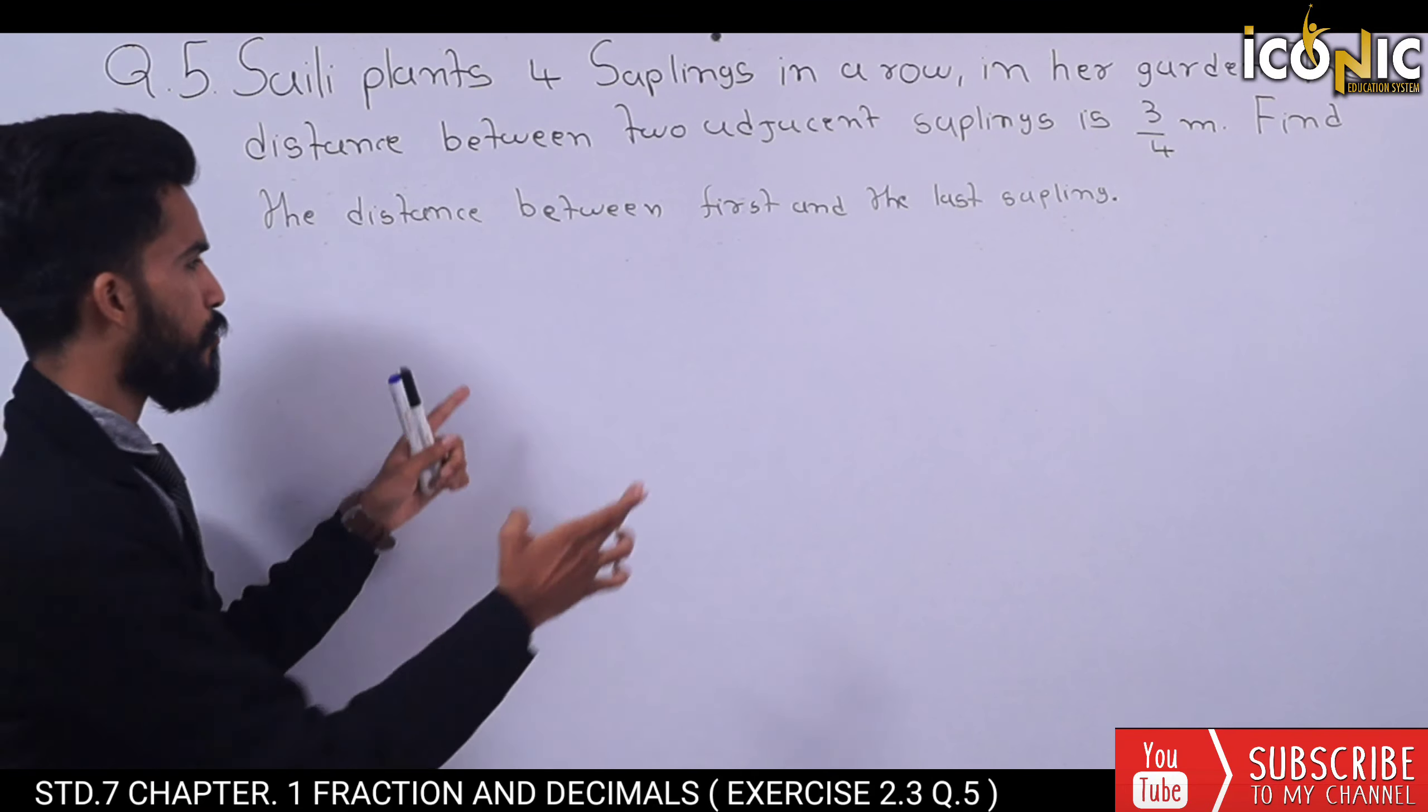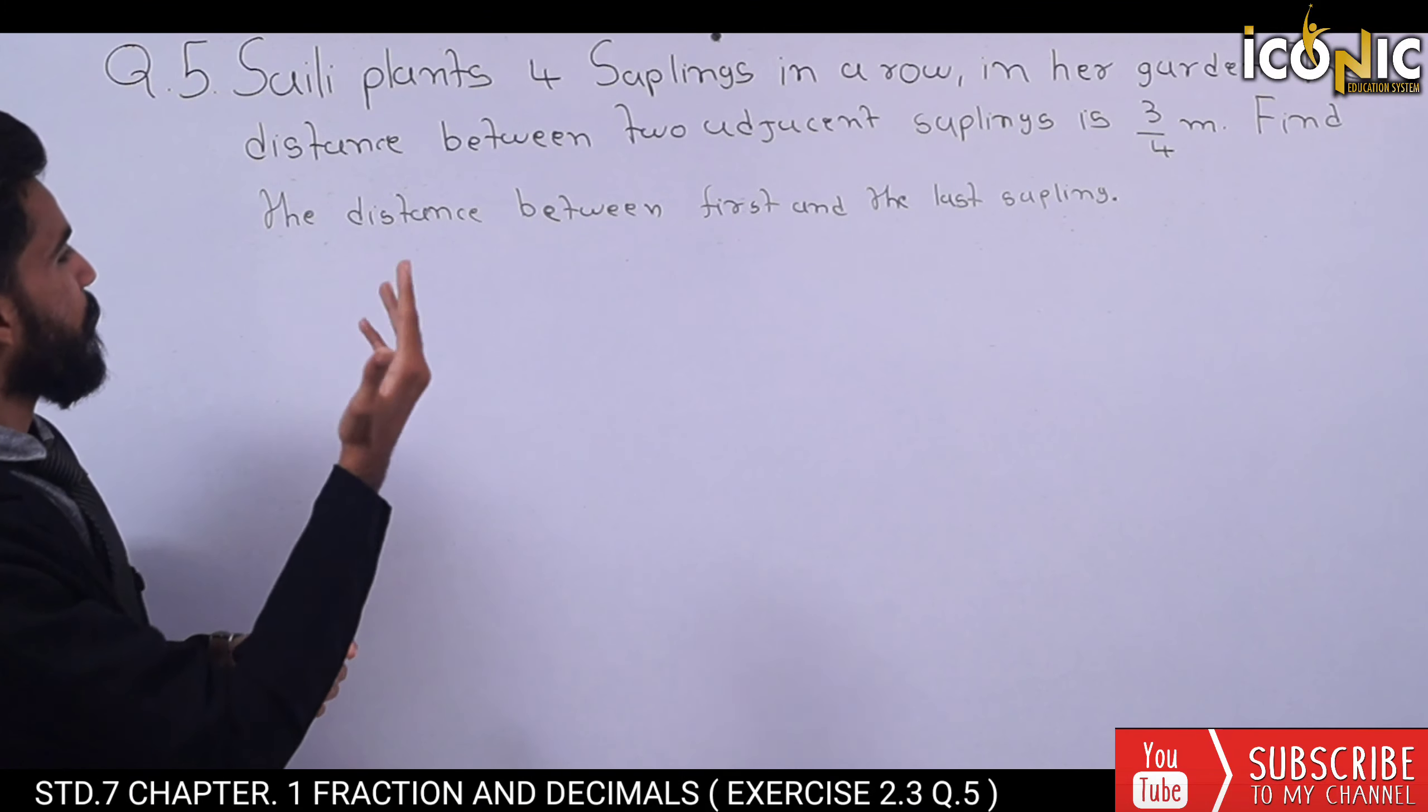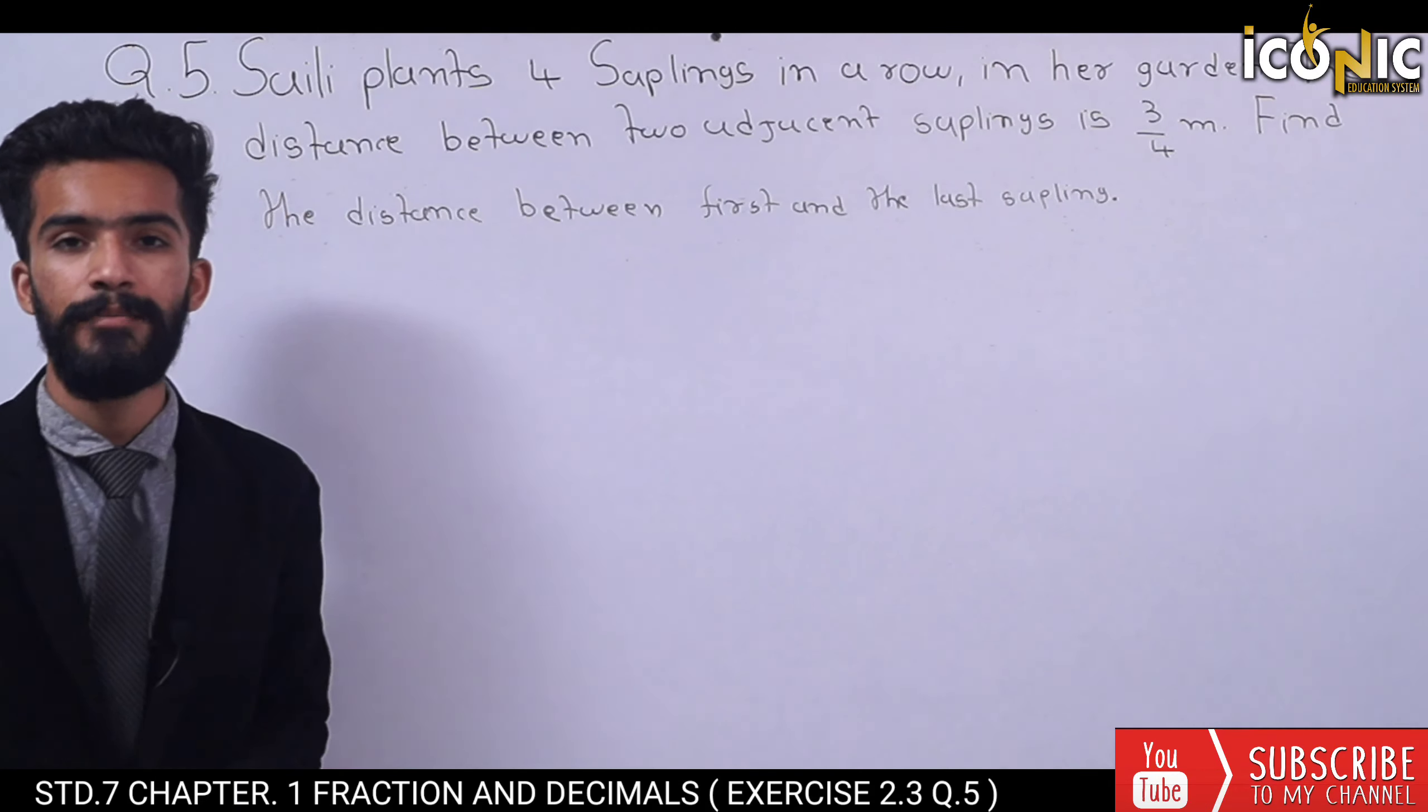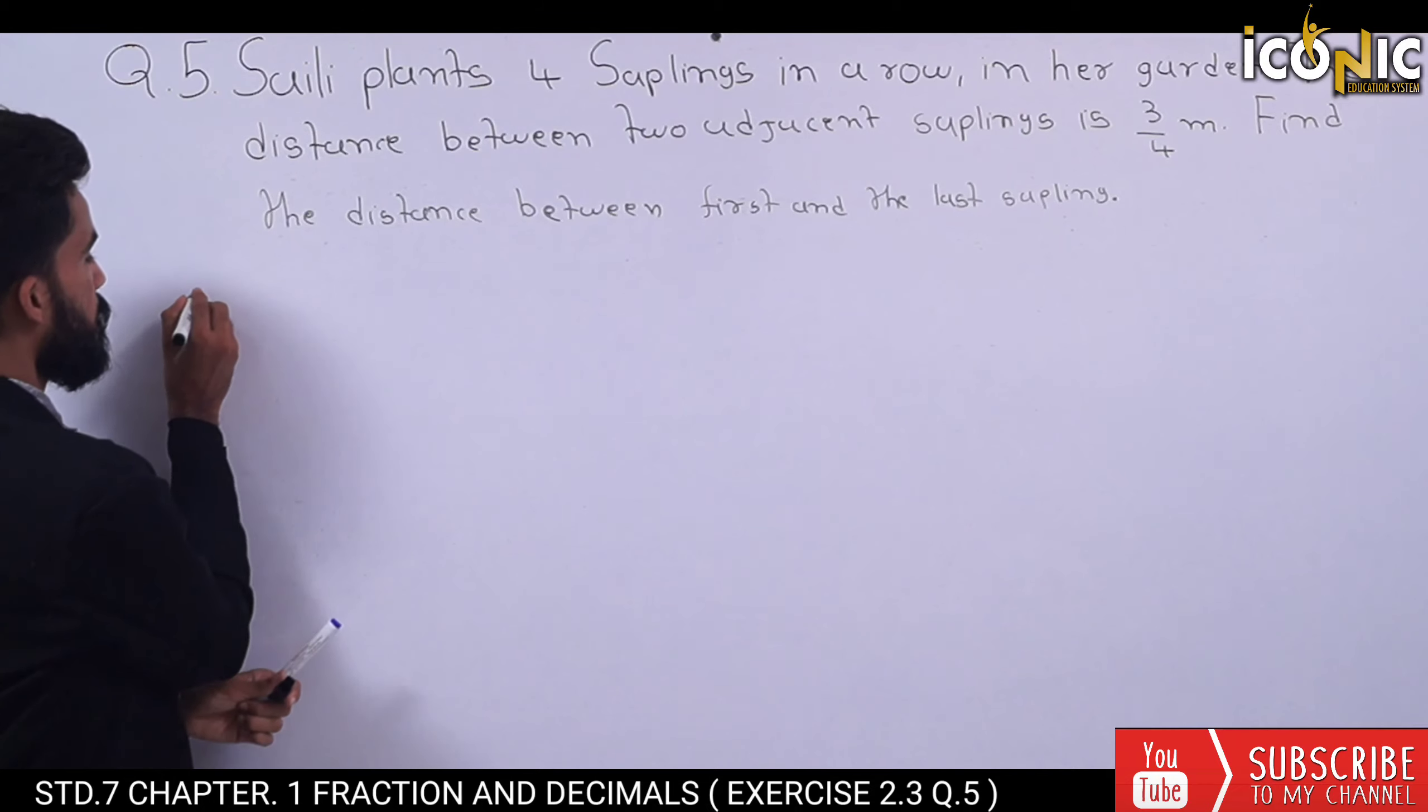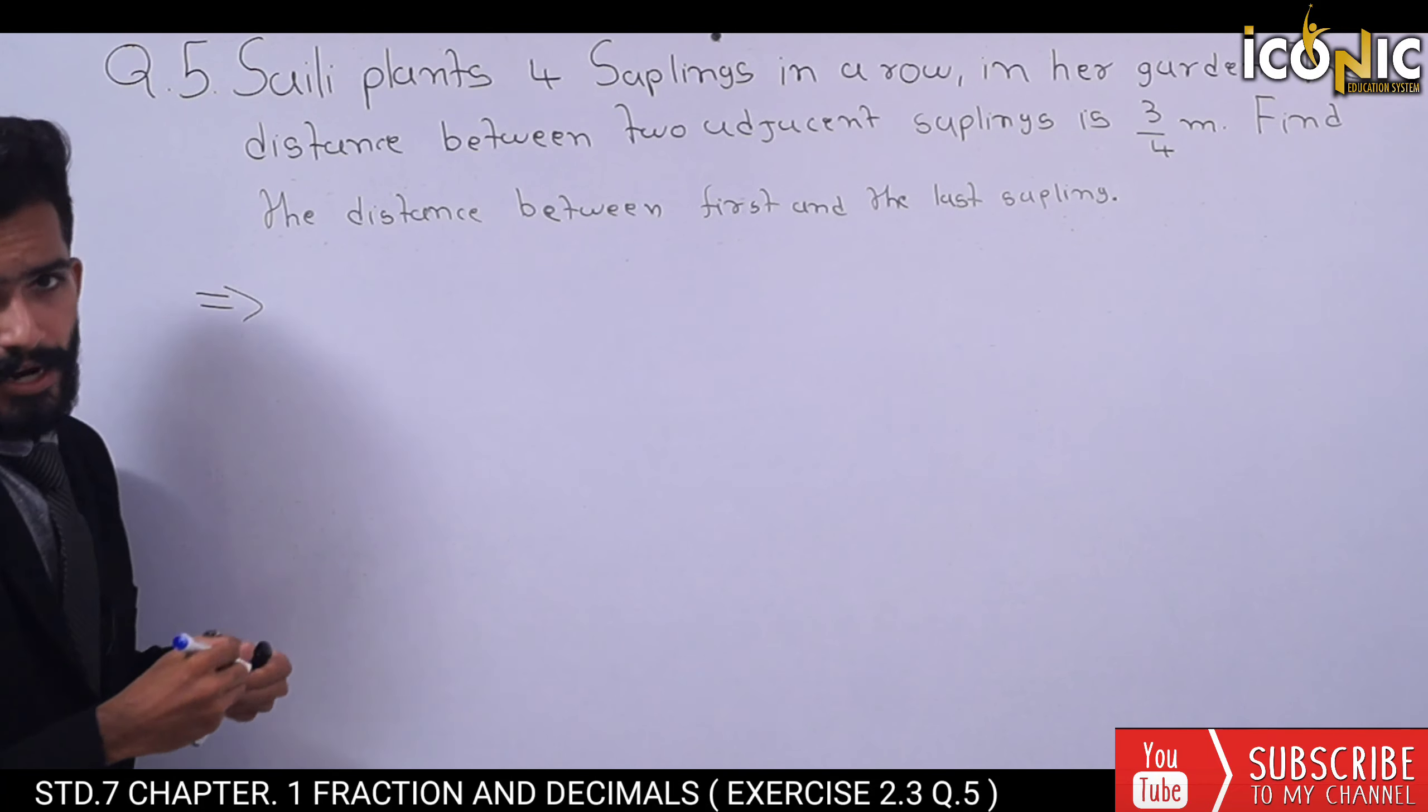is 3/4. We need to find the distance between the first and the last saplings.